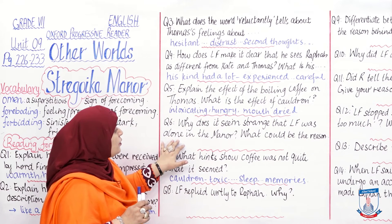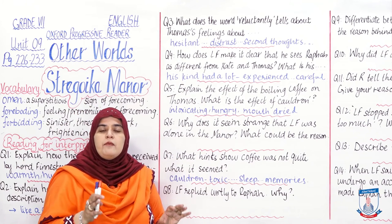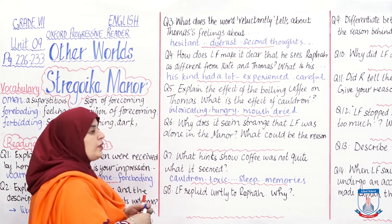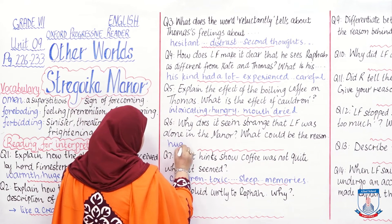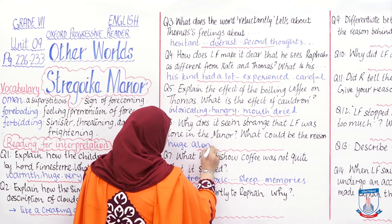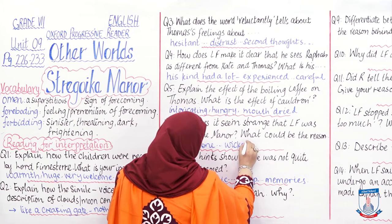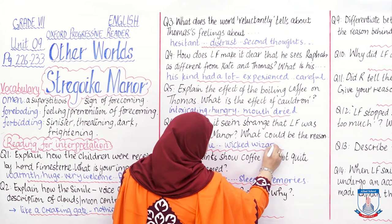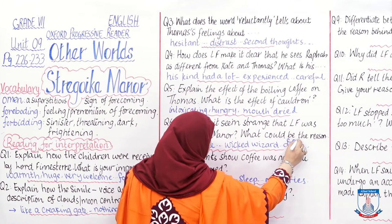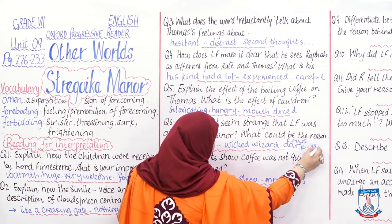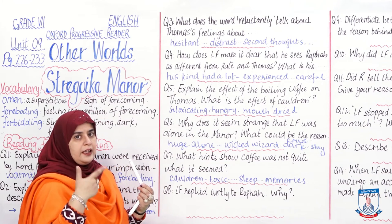Question: Why does it seem strange that Lord Fenister was alone in the manor? What could be the reason? It was strange because it was a huge manor and Lord Fenister was alone in it. This means either he was a wicked wizard with something dark around him, or he was a cruel master — so nobody would stay with him. There are two possibilities: one, he was wicked, and two, he was cruel. That is why people did not stay in that house.